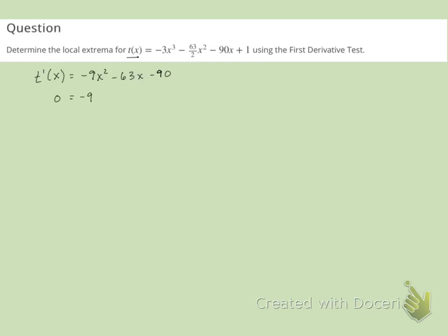We'll set it equal to zero and we want to solve for x. So I'm going to start by factoring out a negative nine. And we will get this. I'm going to keep factoring that trinomial. And we will get x plus five and x plus two, giving us critical values at negative five and negative two.